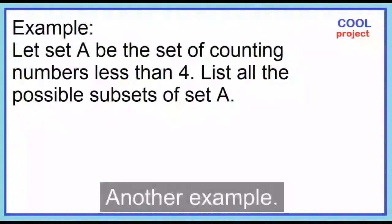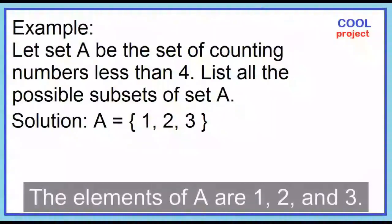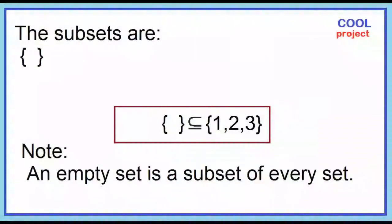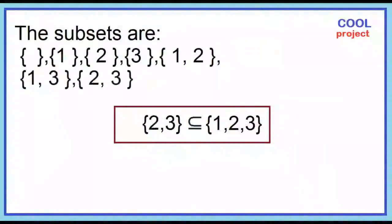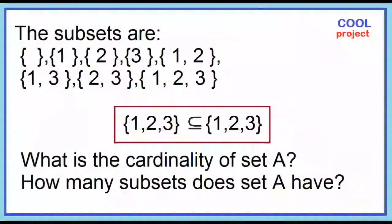Another example: Let set A be the set of counting numbers less than 4. List all the possible subsets of set A. The elements of set A are 1, 2, and 3. The subsets include: a set with no element (an empty set is a subset of every set), sets with one element, two elements, and three elements (a set is a subset of itself). The cardinality of set A is 3, and set A has 8 subsets.